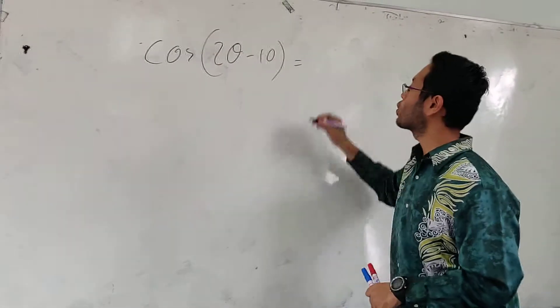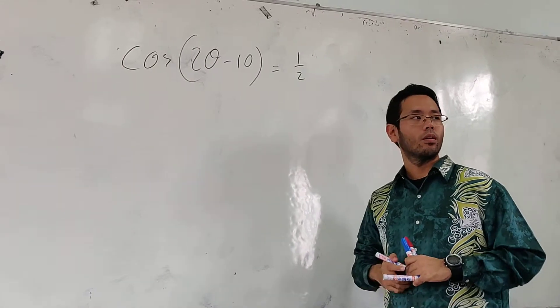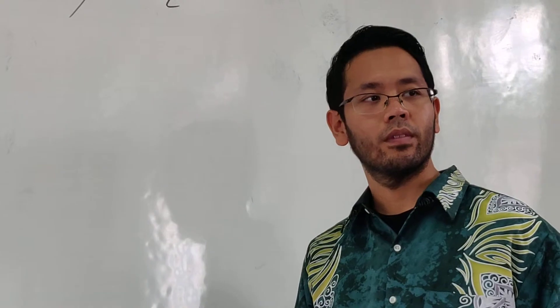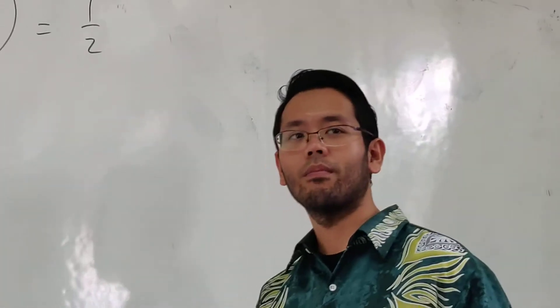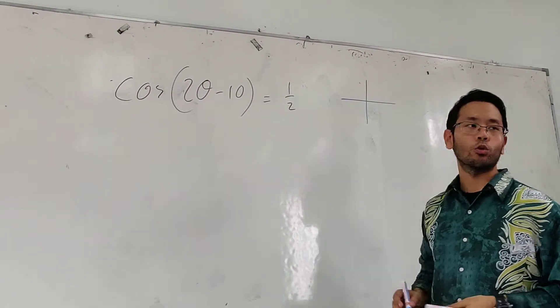Say here is 1 over 2. What's the first step? Before you shift course, I prefer you to do something else. Check which quadrant.